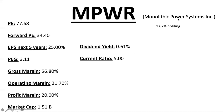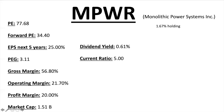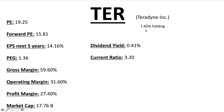Monolithic Power Systems, ticker MPWR, is the next holding with 1.67% equity. PE ratio is very high at 77.68, Forward PE 34.40, EPS next five years 25% — great numbers but the stock is quite overvalued, bringing the PEG ratio to 3.11. Gross margin 56.8%, operating margin 21.7%, profit margin 20% — all very good margins. Market cap $1.51 billion, small dividend 0.61%, current ratio 5.0.